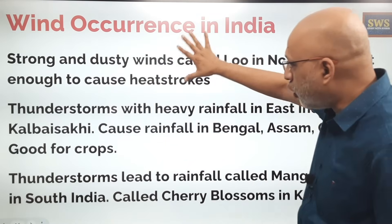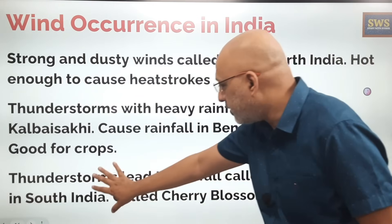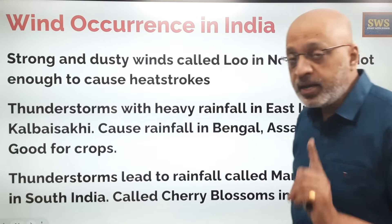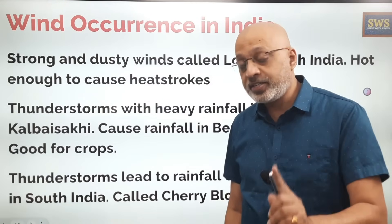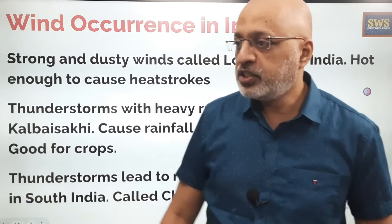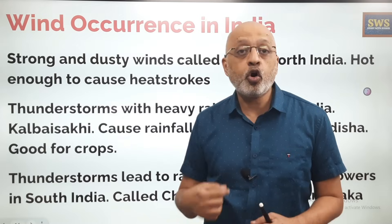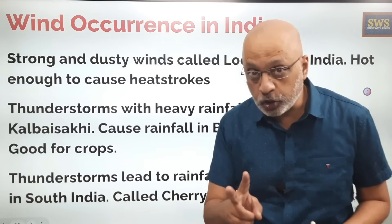In south India, thunderstorms lead to rainfall called mango showers. In Karnataka, they are called cherry blossoms — this is a favorite question in board exams, so pay attention. These showers happen during the summer months along the Karnataka and Kerala coast, helping the mango crop ripen early and also benefiting coffee and tea plantations.